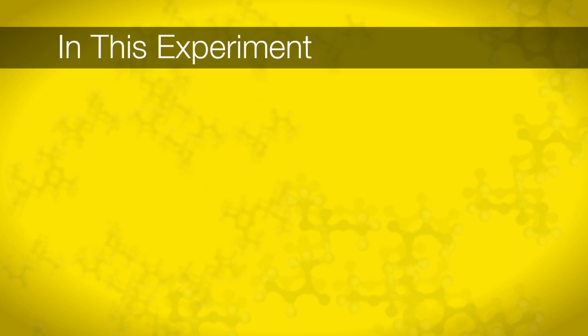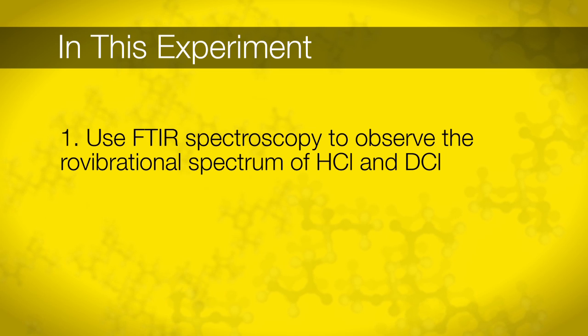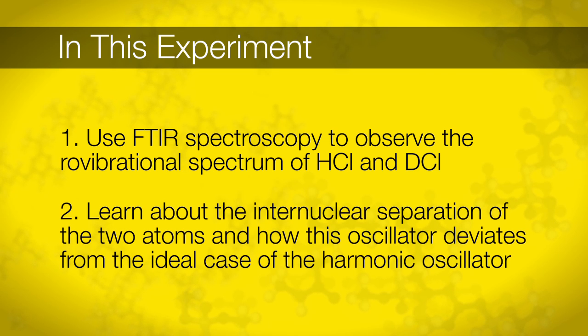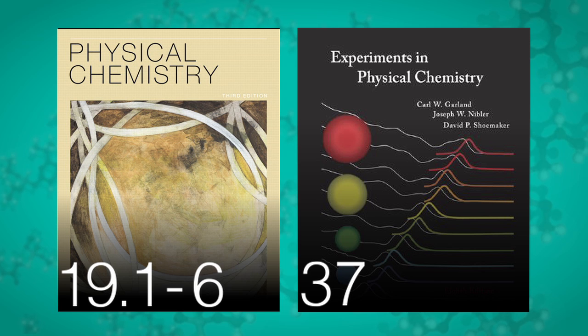In this experiment, we'll use FTIR spectroscopy to observe the rovibrational spectrum of HCl and DCl. From analysis of the acquired spectrum, you will learn about the internuclear separation of the two atoms and how this oscillator deviates from the ideal case of a harmonic oscillator. Before coming to lab, please read Ingle & Read 19.1-19.6 and Experiment 37 in the Garland eBook.